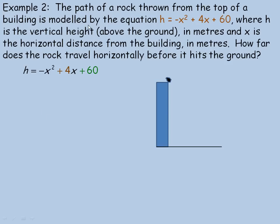Moving to the application on the second page: the path of a rock thrown from the top of a building is modeled by h equals negative x squared plus 4x plus 60, where h is the vertical height in meters above the ground and x is the horizontal distance from the building in meters. We are asked how far the rock travels horizontally before hitting the ground. When it hits the ground, the height h equals 0, giving us negative x squared plus 4x plus 60 equals 0.